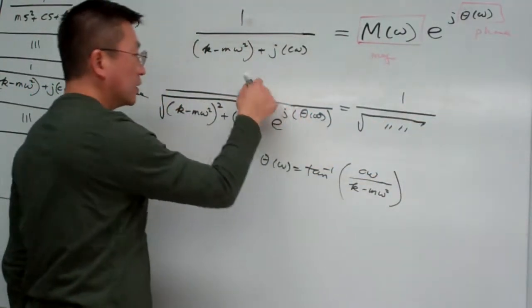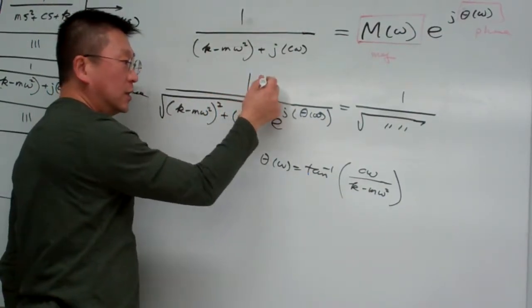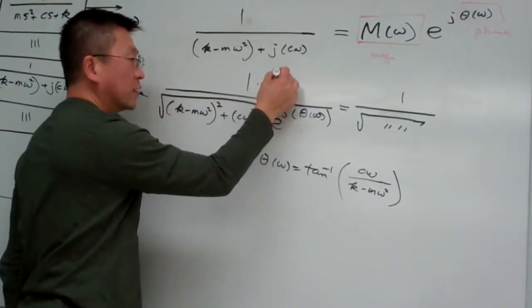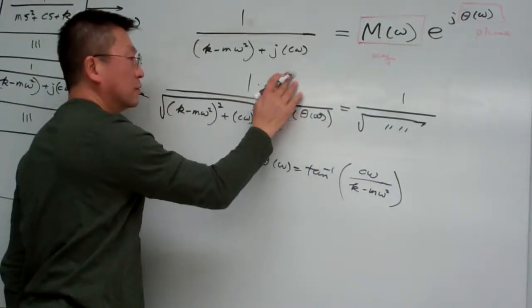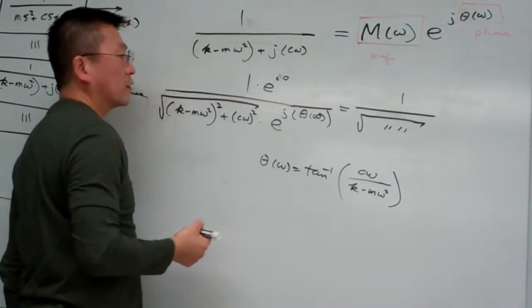And then this one is a constant equivalent and it has the phase angle equal to zero. So numerator has the phase angle equal to zero.